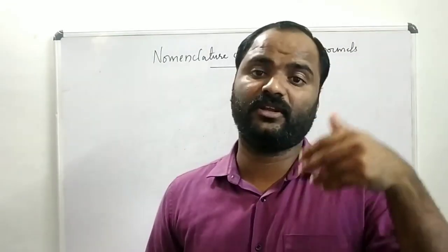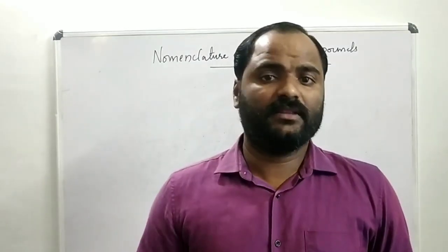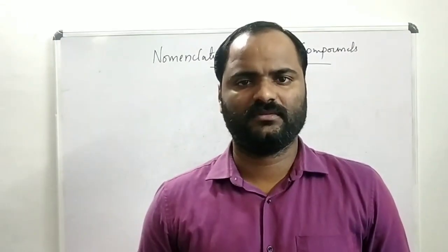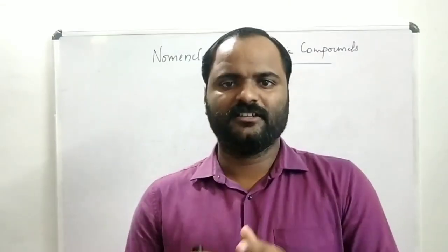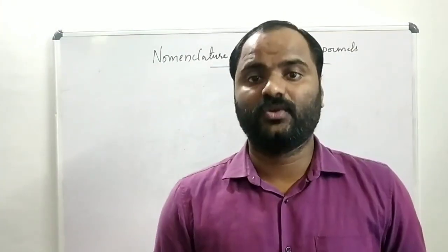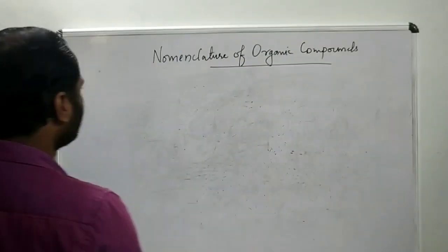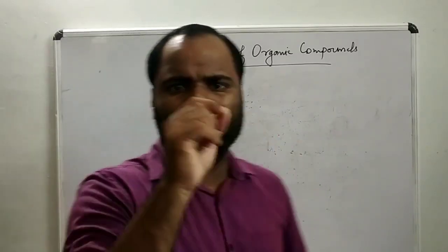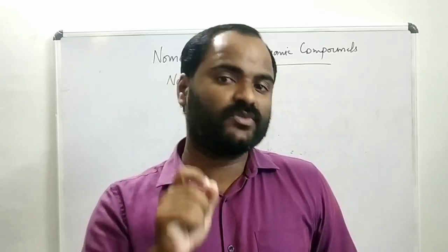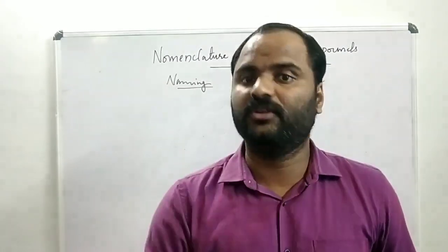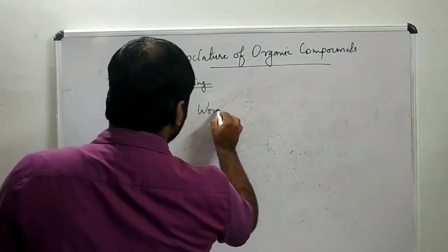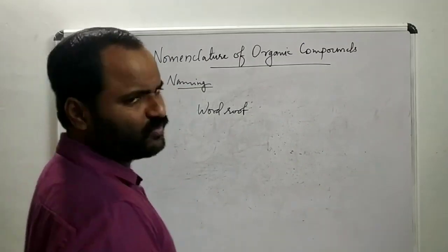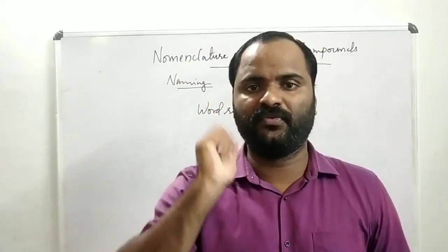For the common system there are no particular rules. When we take IUPAC nomenclature, there are some set of rules we have to follow to name a particular compound. In organic chemistry a huge number of compounds are there, so we need specific rules and fundamental points. The first thing that comes to mind when discussing naming is the word root. Word root is nothing but it depends on the number of carbon atoms.